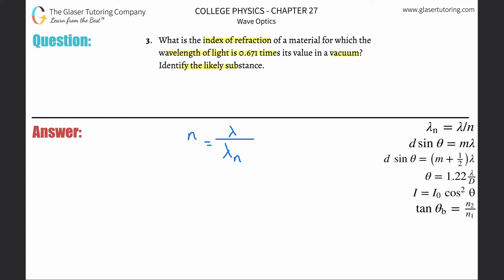In other words, what they gave us is the wavelength in the material relative to the wavelength in a vacuum will be equal to 0.671. So they gave us a ratio.